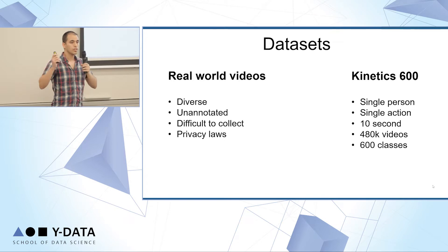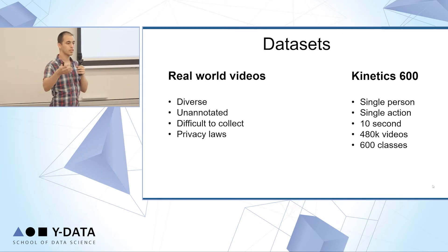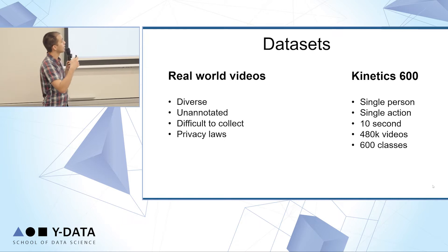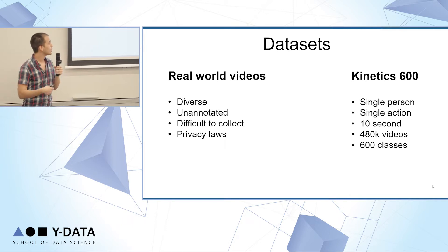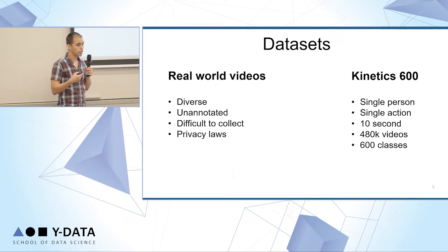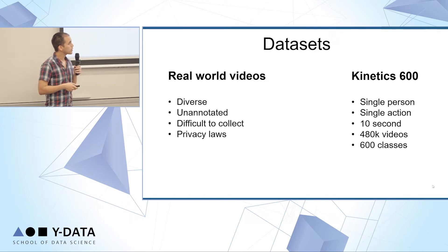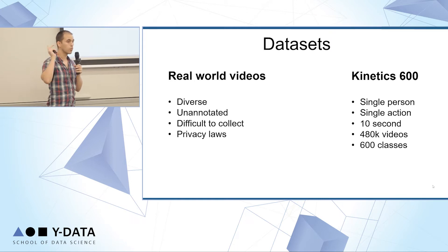We would have loved to work with data from Lightrix — real-world videos that people take on their phones and edit on the Lightrix app. But that data is very diverse, unannotated, very difficult to collect, and there are a lot of legal issues. So we decided to test our pipeline on a very popular computer vision action classification dataset called Kinetics 600, which contains half a million 10-second videos of one person doing one thing.